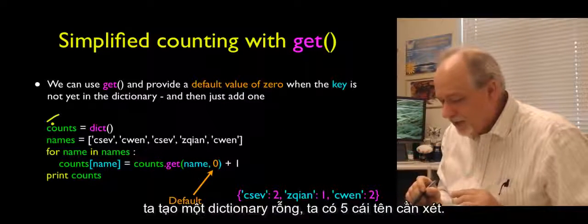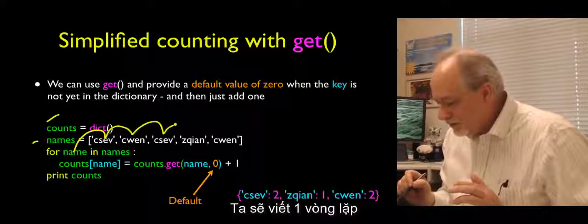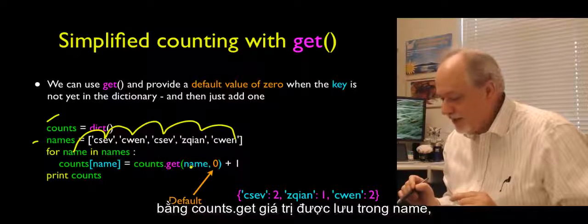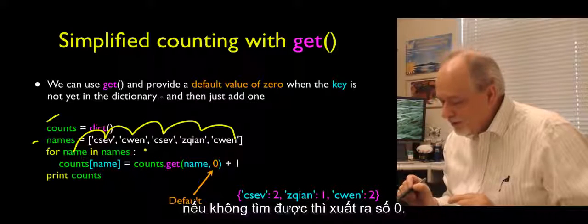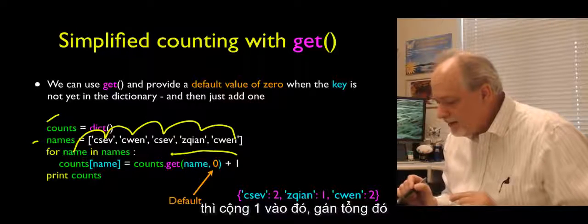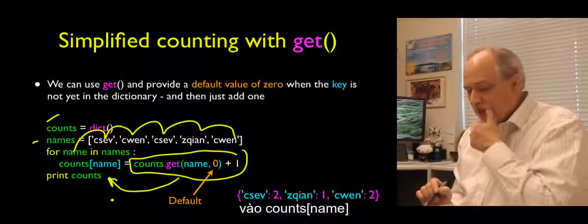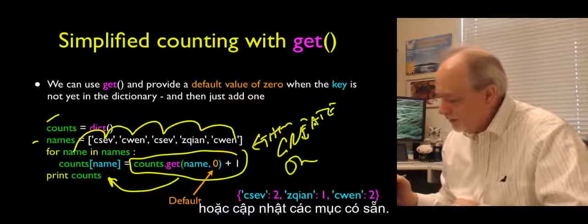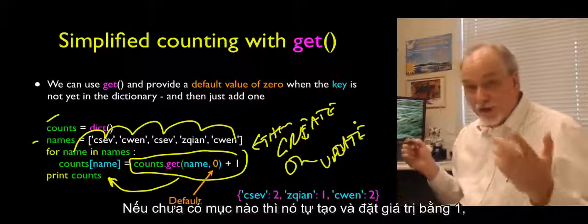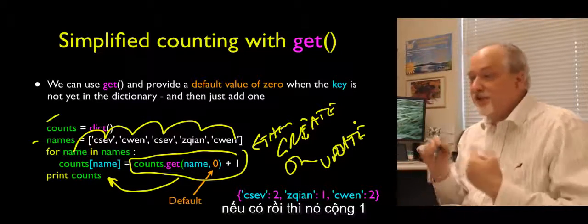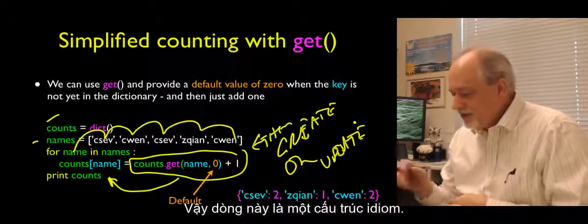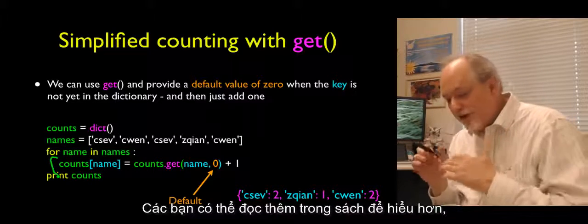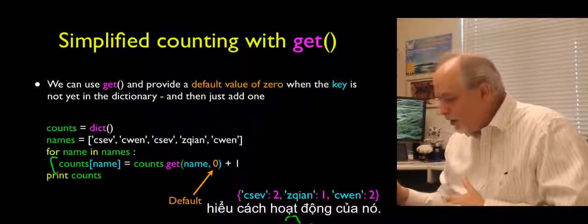We can reconstruct that counting loop much more cleanly using this idiom. We create an empty dictionary, have five names to go through, and write a for loop. Then we say: counts sub name equals counts.get(name, 0) plus 1. Whatever comes back — either the old value or zero — we add one and store it back in counts at name. This is either going to create a new entry set to 1, or update an existing entry by adding 1. Read about it in the book and get used to it — I'm going to start using it as if you understand it.